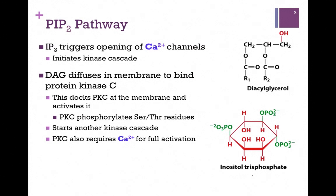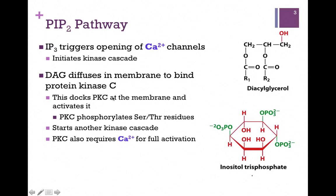Our inositol trisphosphate, which is soluble in the cytoplasm, is going to diffuse and open up a calcium channel — note that this would make that channel a ligand-gated channel. The influx of calcium will then initiate a kinase cascade, and so we've accomplished one half of our mission by inositol trisphosphate. Diacylglycerol will remain in the membrane, diffuse, and bind a protein called protein kinase C. This docks this enzyme at the membrane and activates it.